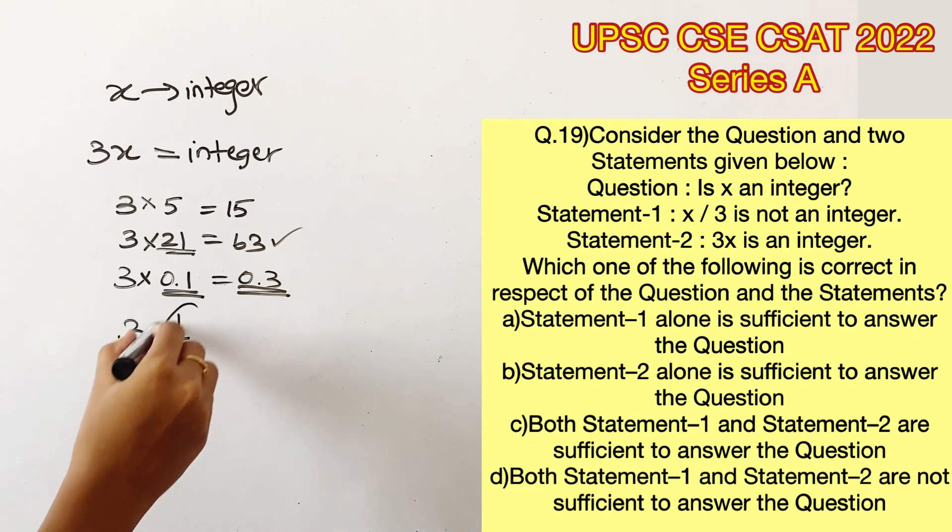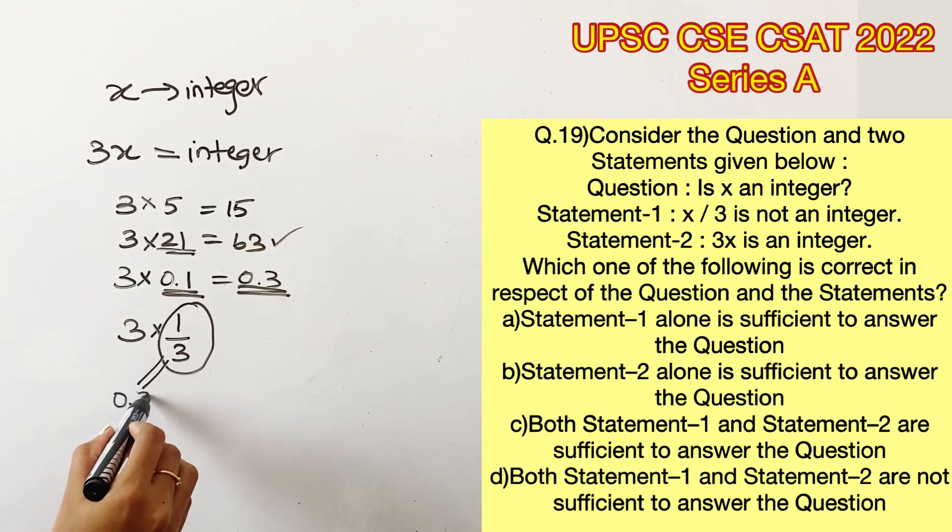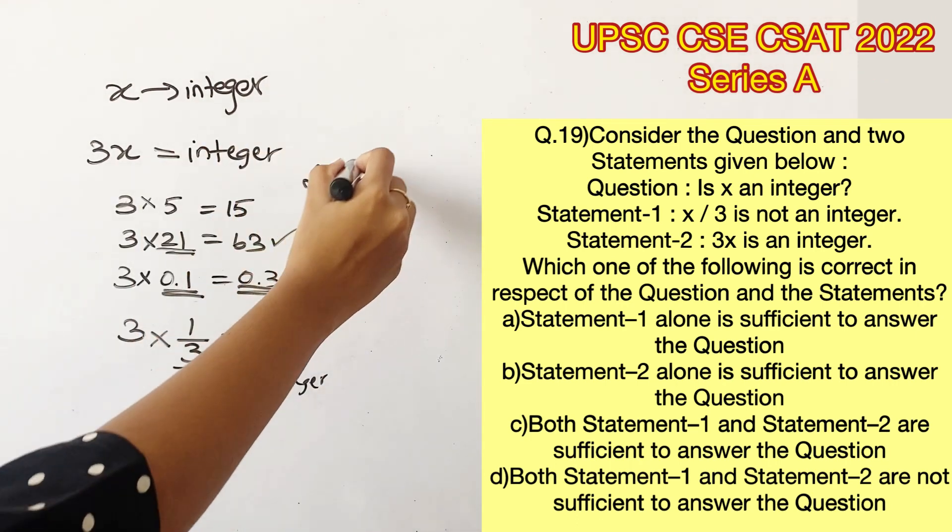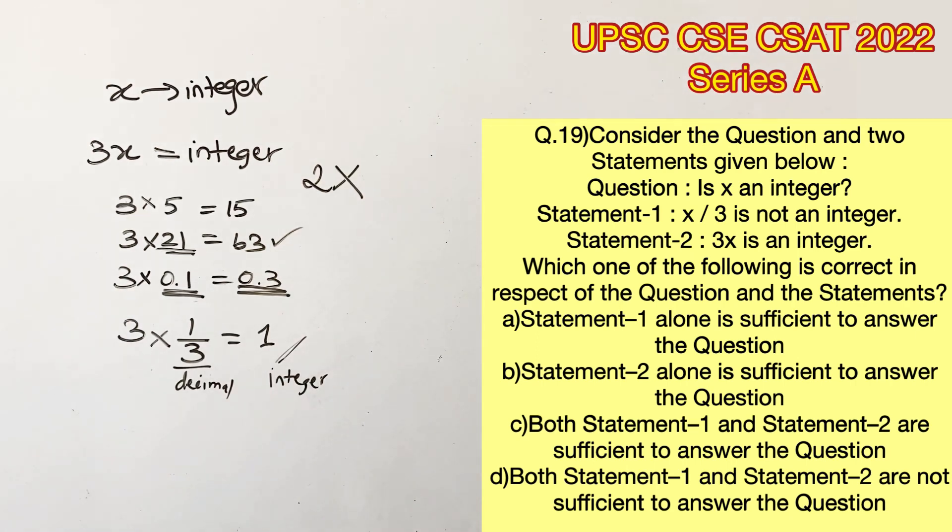That is when you take 1 by 3. 1 by 3 in decimal form is 0.33, but we are taking it in fraction form, which will give us the answer as 1, which is an integer. So when a decimal value is substituted in the place of x, we get either an integer or a decimal. So statement 2 also is not sufficient to answer this question.